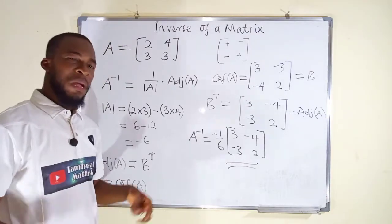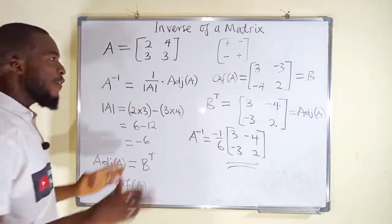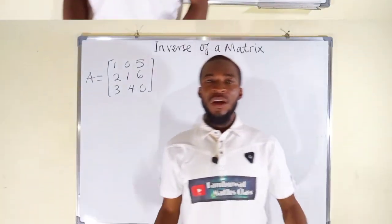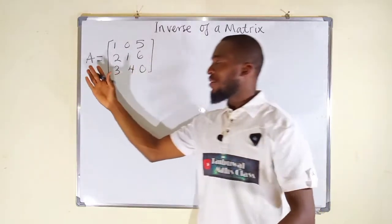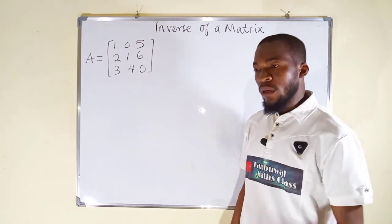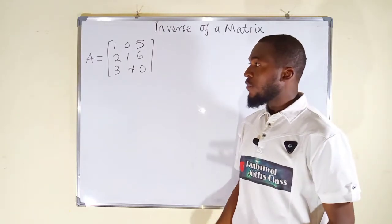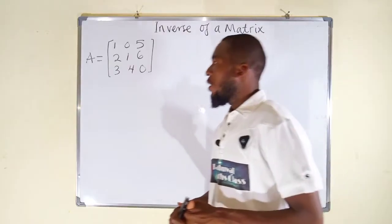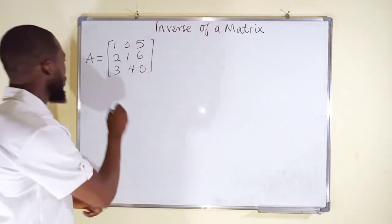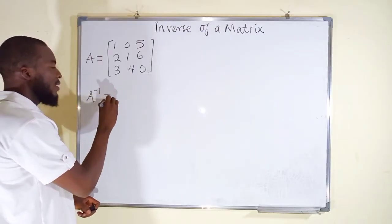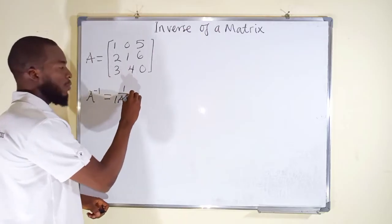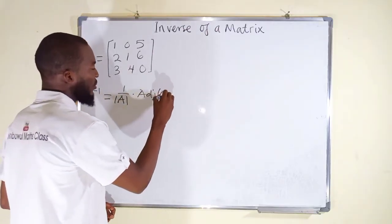Now let us look at how to find the inverse of a 3x3 matrix. Suppose we have a matrix A with these entries — you can see this is a 3x3 matrix. One thing again: you can only find the inverse of a square matrix. Let's apply our formula: A inverse equals 1 over the determinant of A multiplied by the adjoint of matrix A.